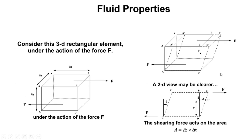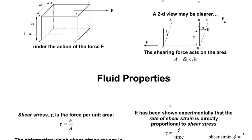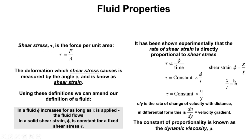So to find phi we divide x over y. Then tau is equal to a constant multiplied by phi over t. When we remove the proportionality symbol we include an equal sign plus a constant. Substituting phi, the equation reduces to tau equals a constant multiplied by du/dy over y.